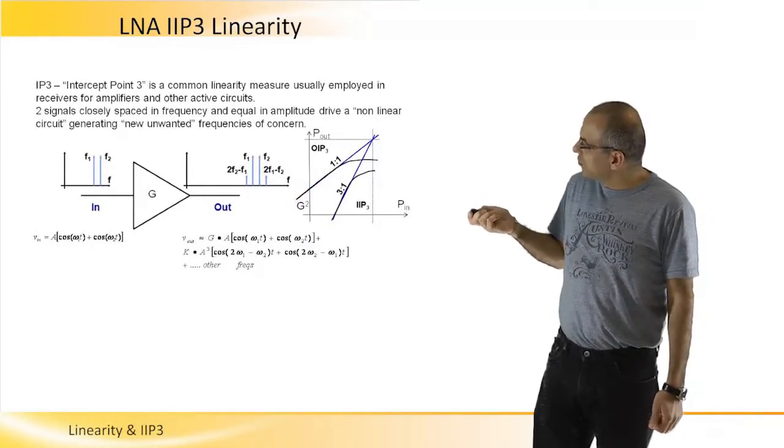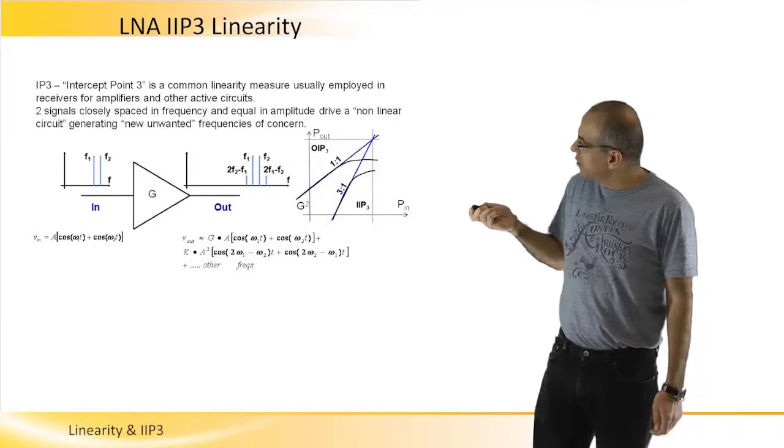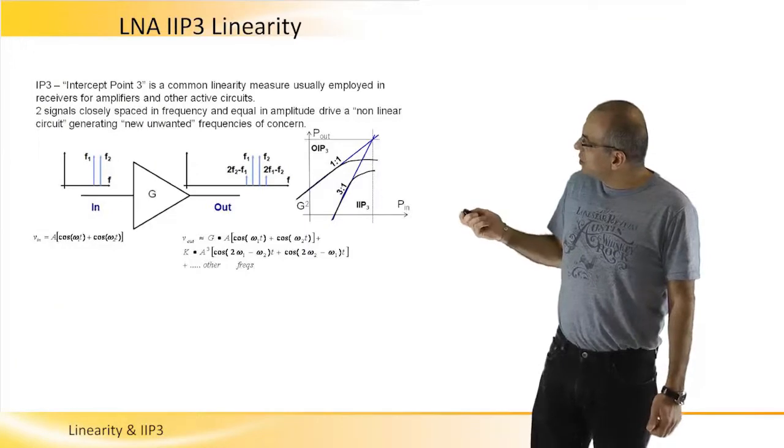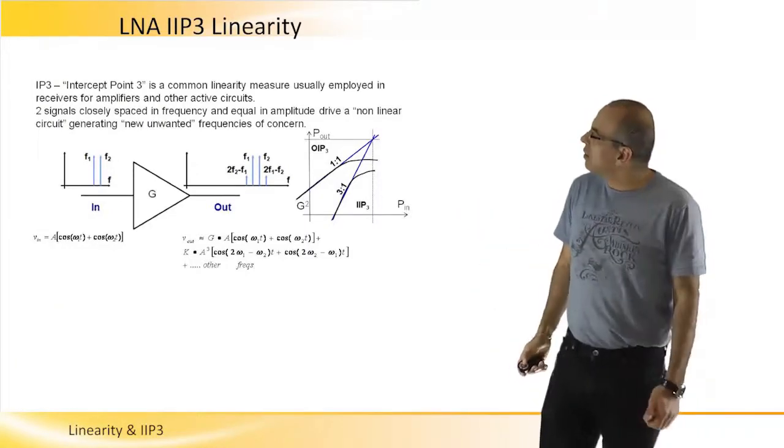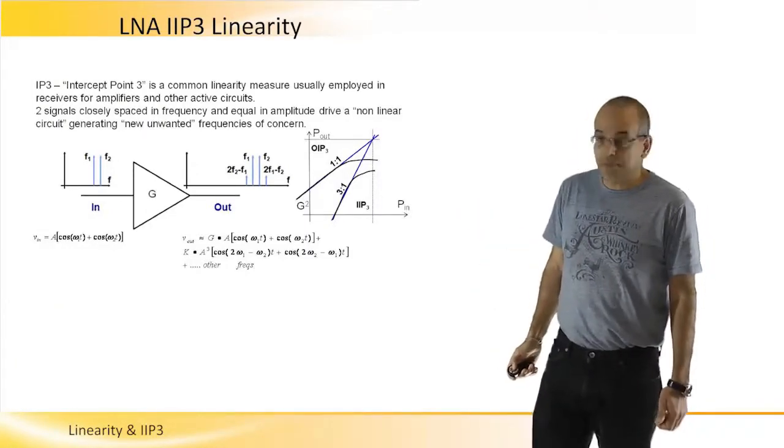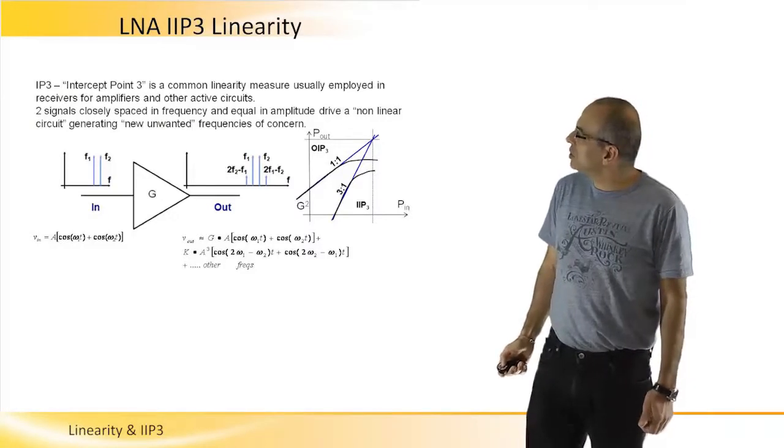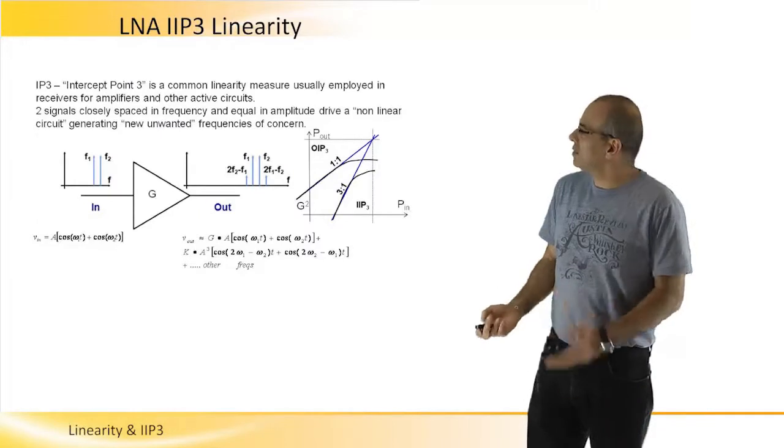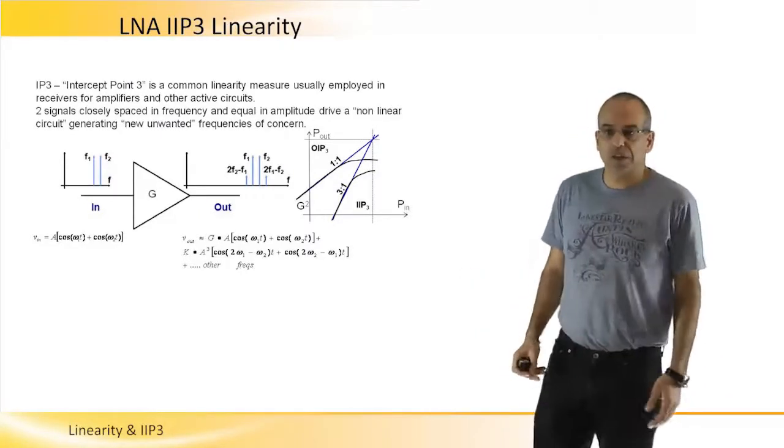We will find a theoretical point of interception, which is called the IP3, the intercept point 3, to define the linearity of the circuit.